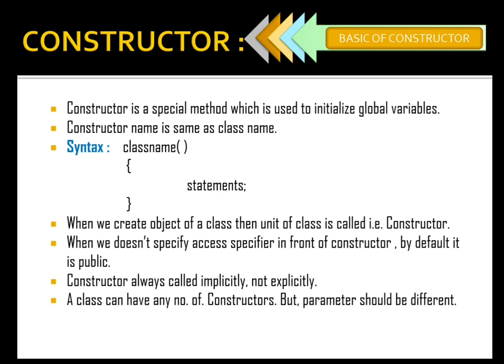When we create an object of a class, the constructor of that class is called. As you all know, how we create an object: class name, object name, equals to new, class name, function bracket open close, semicolon. When we write class name with function bracket open close, that is the calling of a constructor. That's why when we create an object, the first thing that happens is the calling of a constructor.